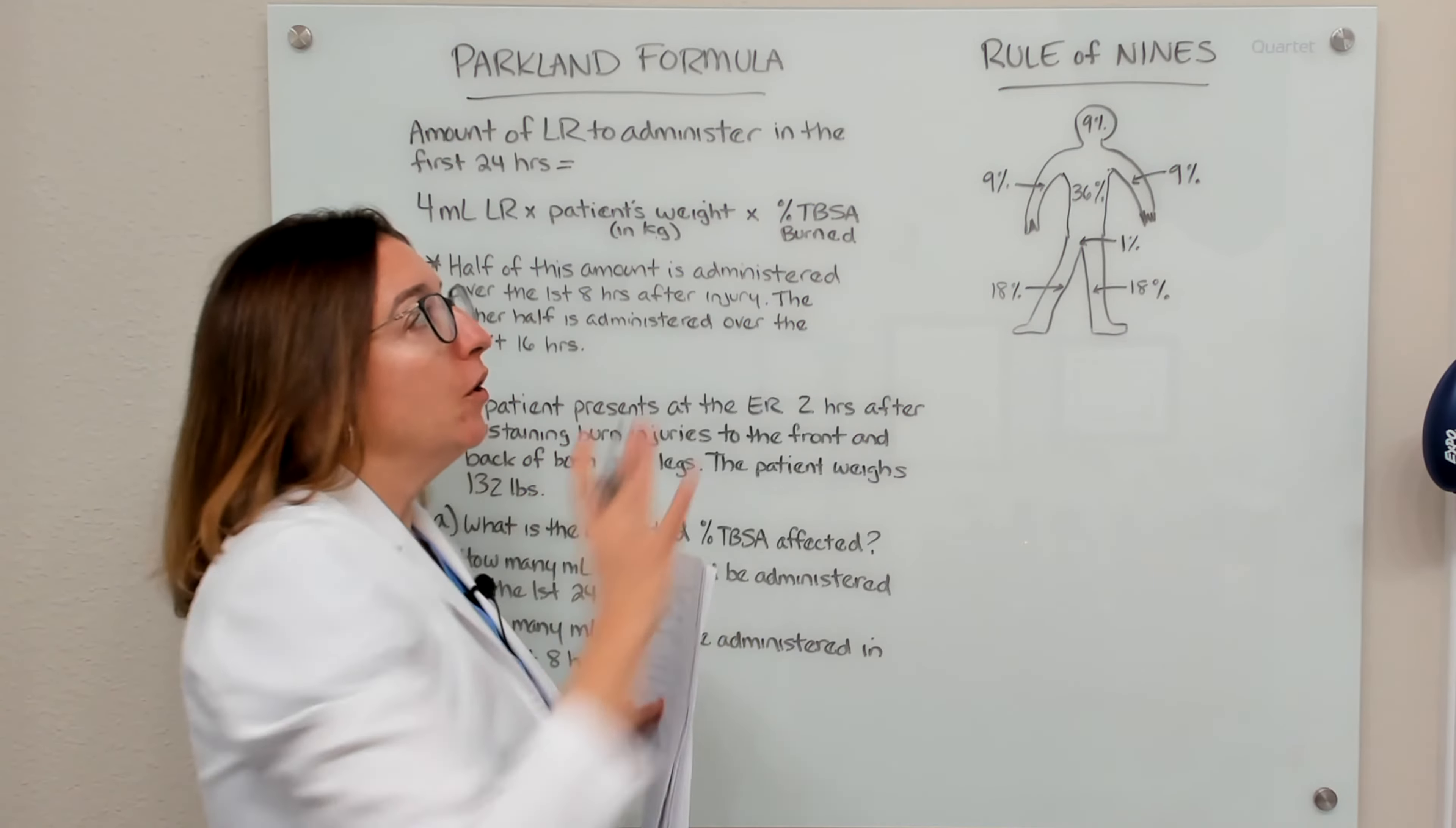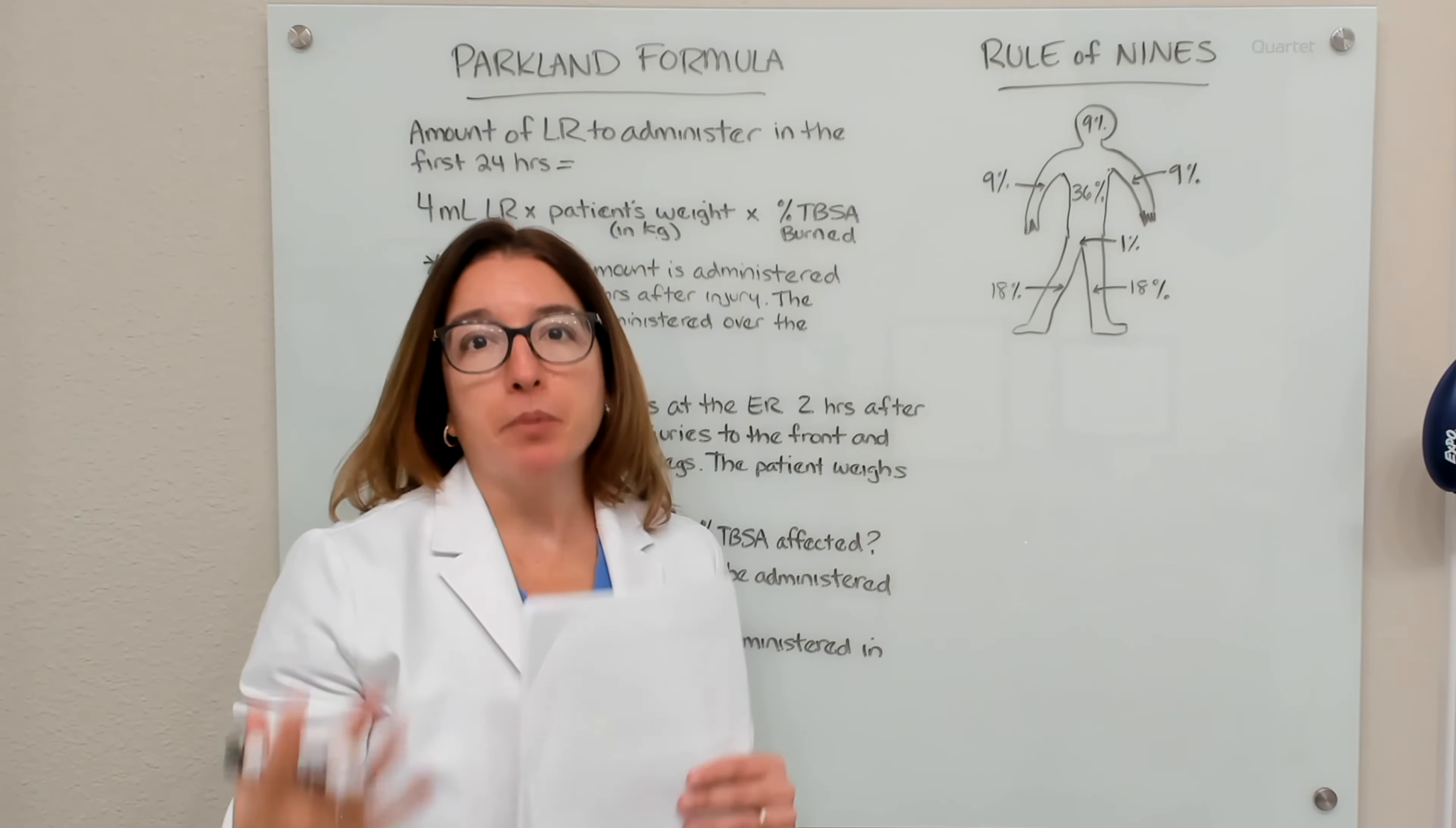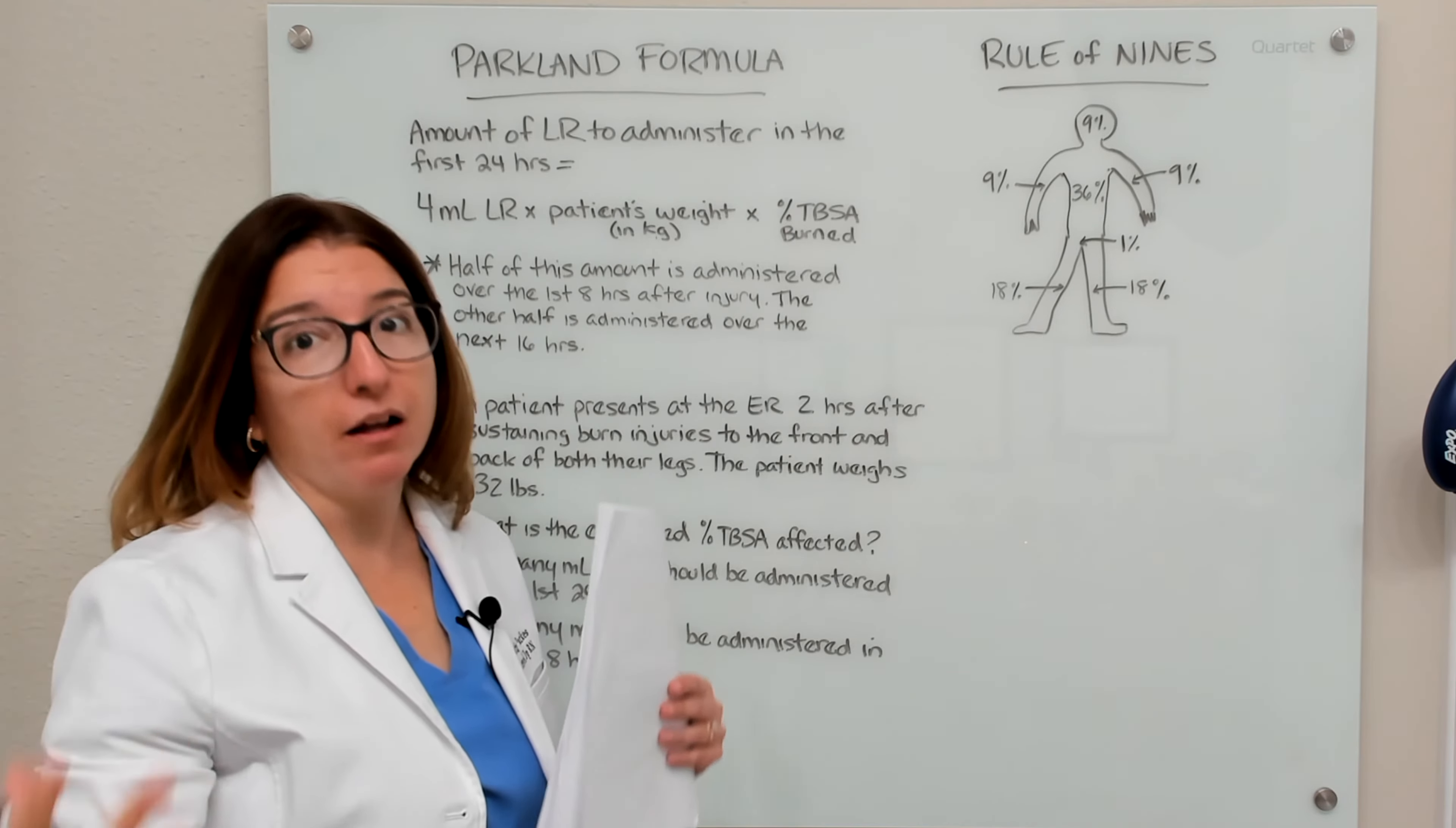So the Rule of Nines is a way for us to estimate the percentage of our patient's total body surface area that has been affected by a burn. And then we will use that percentage in calculating the amount of fluids that we need to administer to the patient,